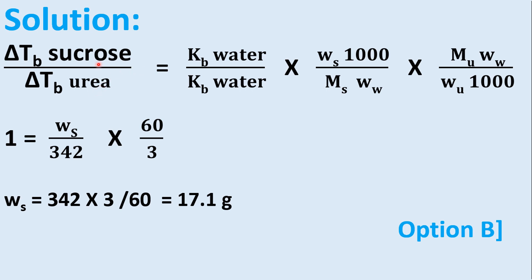Take the ratio of elevation of boiling point of sucrose to that of urea: delta Tb(sucrose) / delta Tb(urea) = Kb(water) / Kb(water) × [molality of sucrose / molality of urea]. Kb of water cancels, mass of water cancels, and the 1000 terms cancel, leaving: Ws / Ms × Mu / Wu.